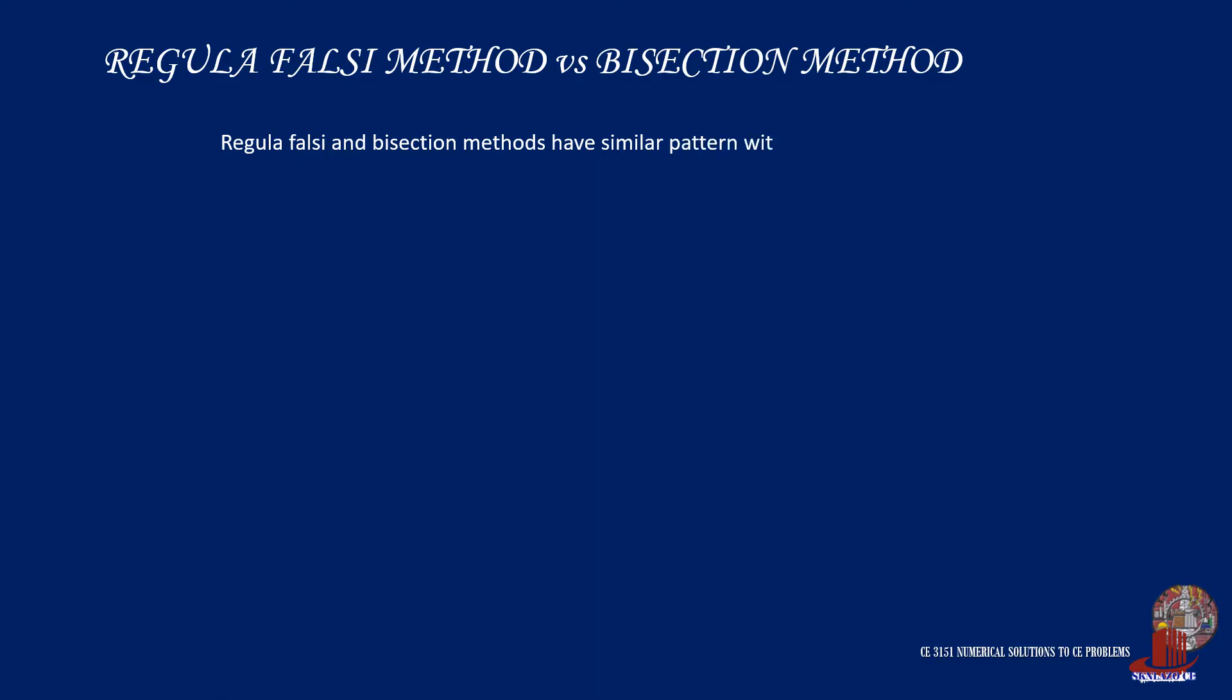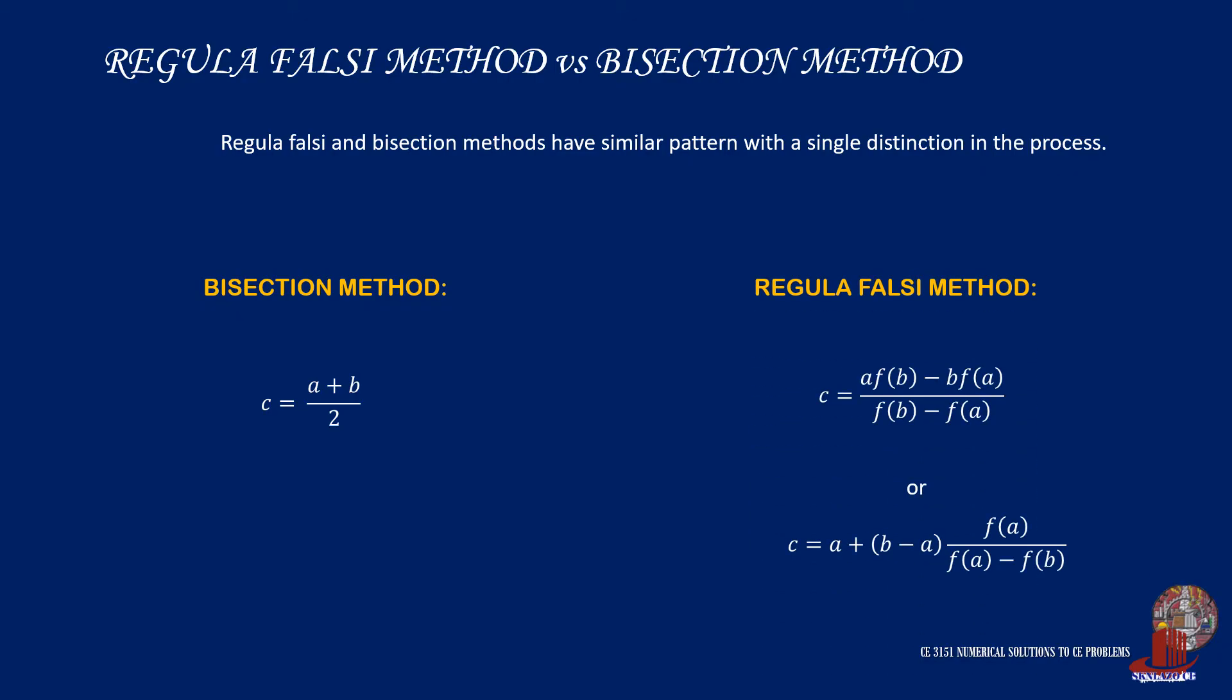In summary, regula falsi has a similar procedure with bisection method. The only difference in the iteration is the way we identify the approximate. Bisection method uses the mid value of the limits, but regula falsi will be using linear interpolation for it. Either formula for regula falsi should let you arrive at the same value of the convergent.